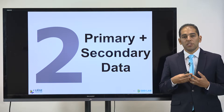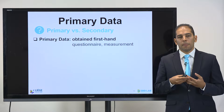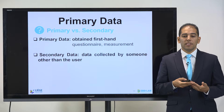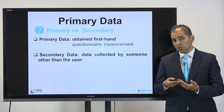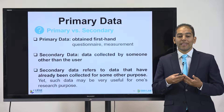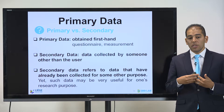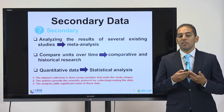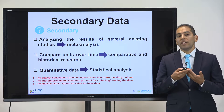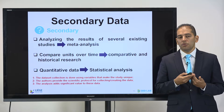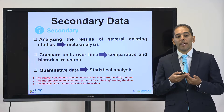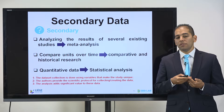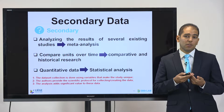Now let's distinguish primary and secondary data. Primary data is obtained firsthand — it's simply questionnaires or measurements — while secondary data is data that is collected by somebody other than the user or the researcher, referring to data that have already been collected for some other purposes, and yet such data may be useful for one's research purpose. With secondary data, we analyze results of several existing studies and can do meta-analysis; it is used a lot for comparative or historical research and is considered quantitative data that requires statistical analysis.